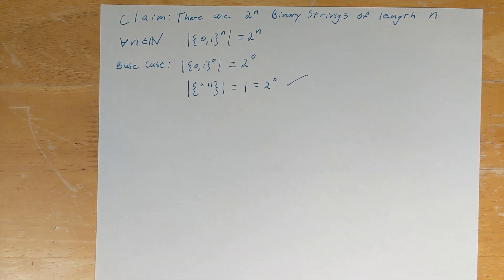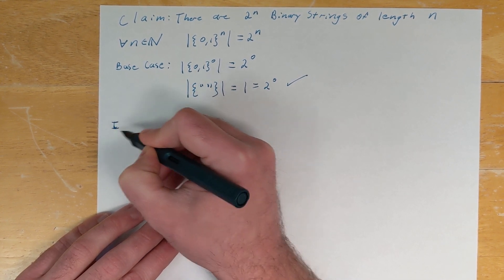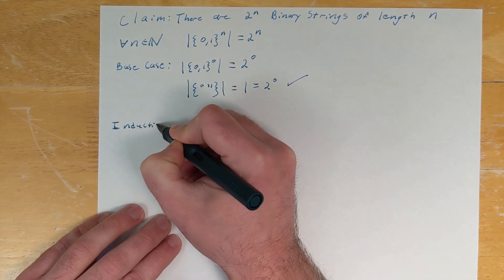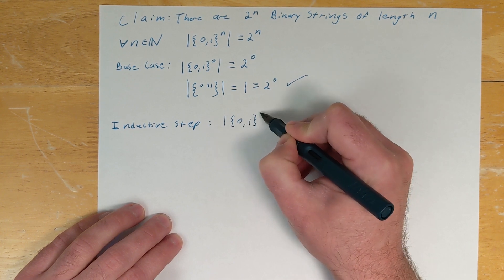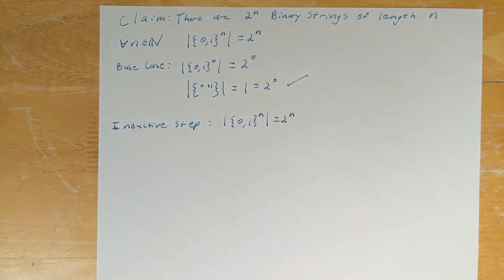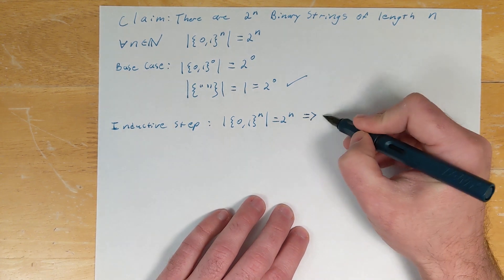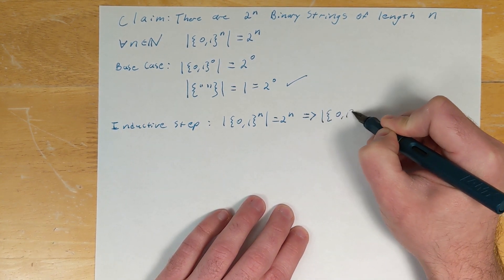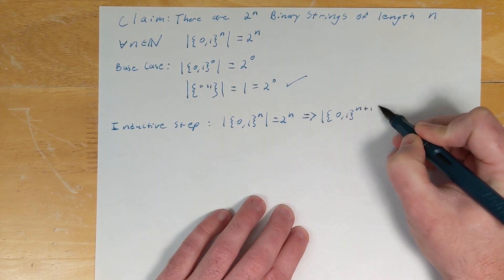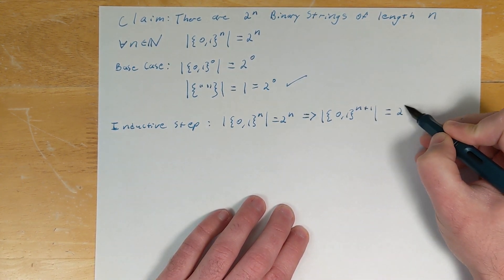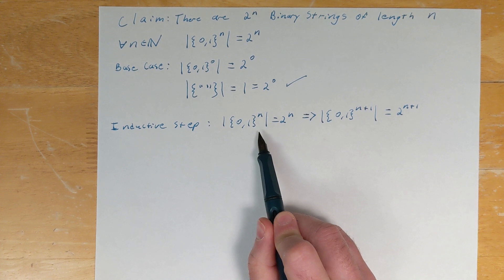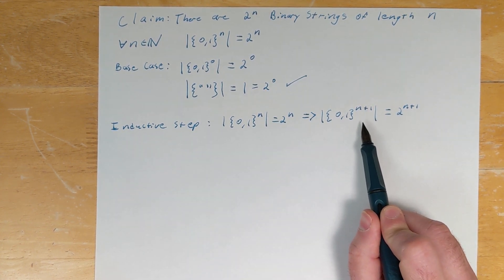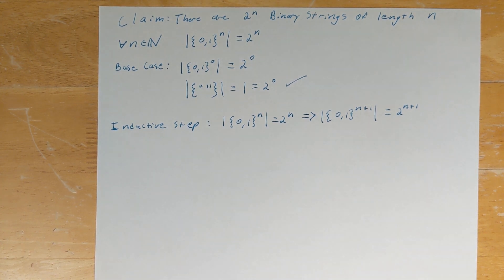The next thing we need to show is the inductive step. The inductive step is where we assume that something is going to be true for some value — we assume that the size of {0,1} to the n is equal to 2 to the n. Under that assumption, we want to show that the statement is true for n plus 1 as well, meaning the number of binary strings of length n plus 1 is also equal to 2 to the n plus 1.